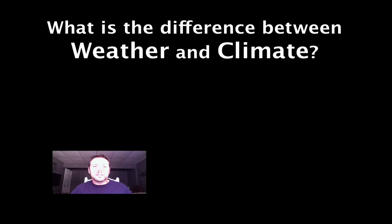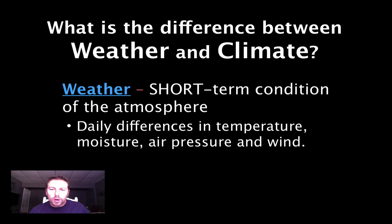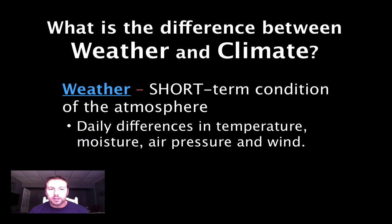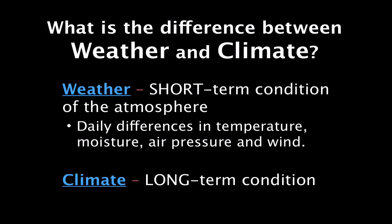So what is the difference between weather and climate? We commonly hear these terms used. Weather is the short-term conditions of the atmosphere — daily differences in temperature, moisture, air pressure, and wind, along with a couple of other variables. These can change from hour to hour, day to day, and season to season. Climate, on the other hand, is our long-term conditions — what has the climate been like over the past two, three, or ten years? So weather is short-term, climate is long-term.